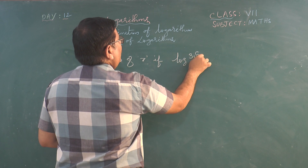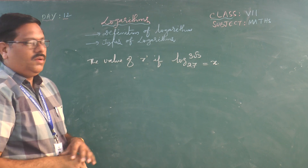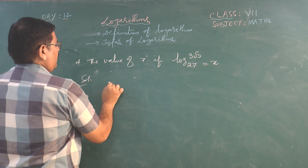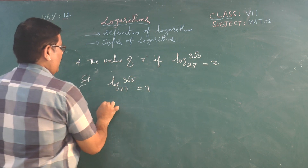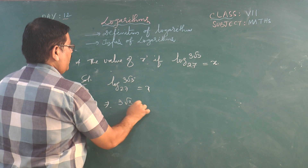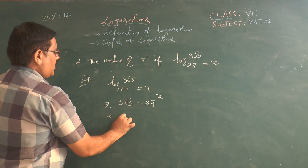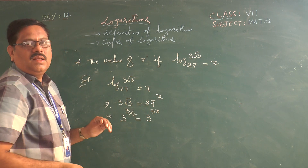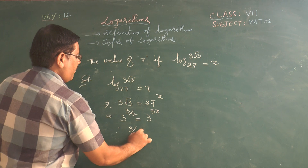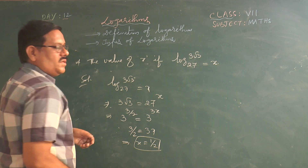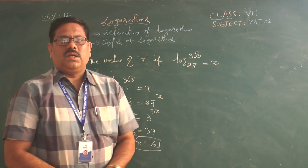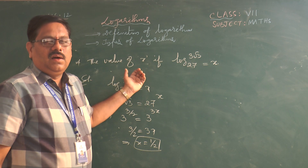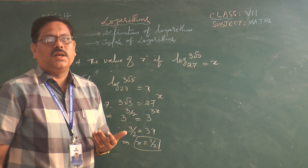Example: Find x if log_27(3√3) = x. By definition, 27^x = 3√3 = 3 × 3^(1/2) = 3^(3/2). Since 27 = 3^3, we have (3^3)^x = 3^(3x) = 3^(3/2). So 3x = 3/2, giving x = 1/2. Today we learned the definition of logarithm, the different types, and solved problems. Tomorrow we will cover more properties of logarithms.